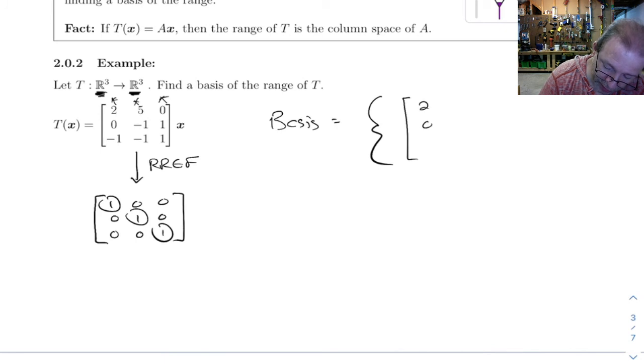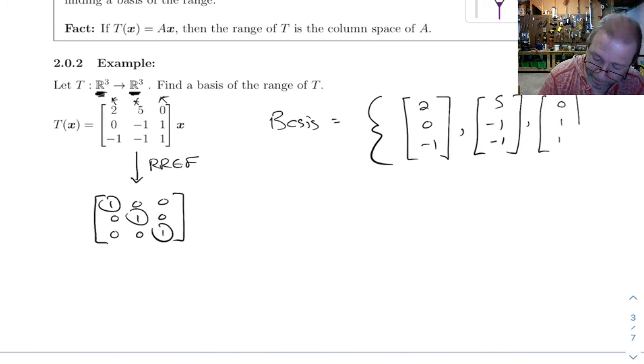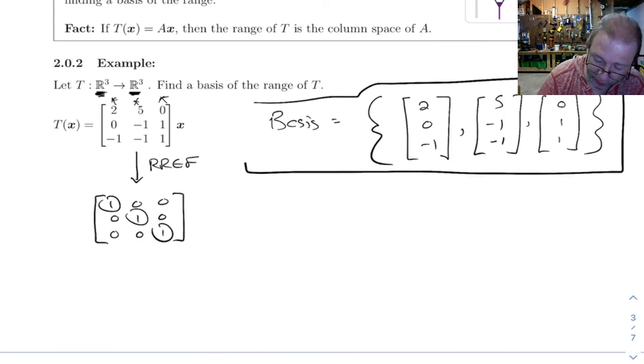So we've got 2, 0, 1, negative 1, 5, negative 1, negative 1, and 0, 1, 1. So that is a perfectly good answer to this question.